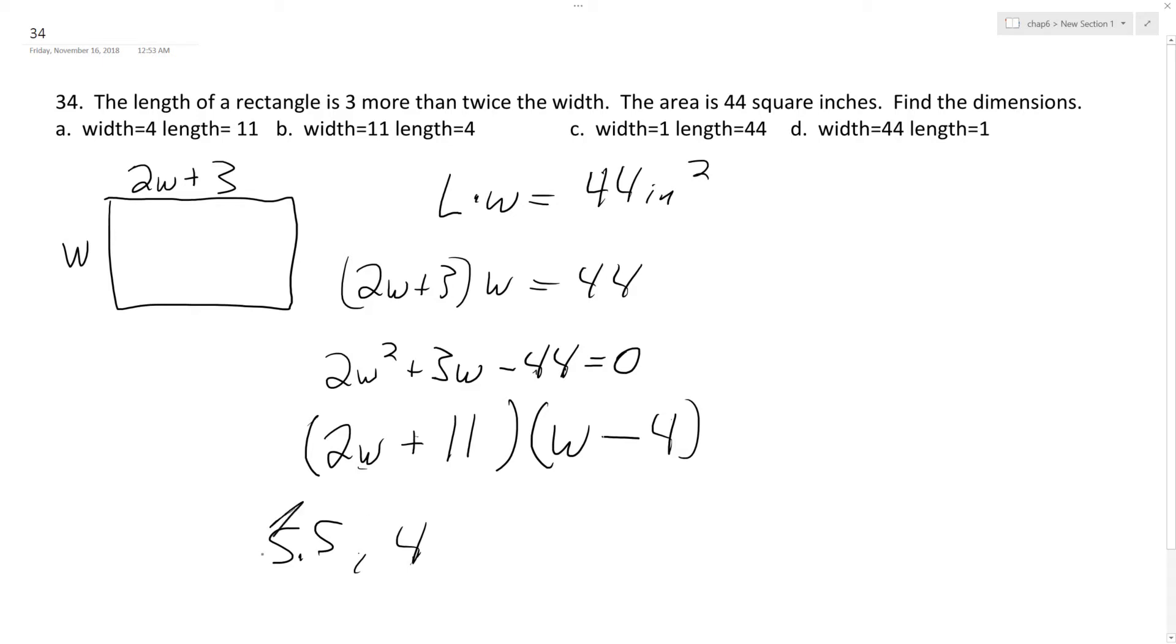So in this instance, length is going to be equal to 4. We did have negative 5.5, but that's an extraneous solution, so it's 4. So if we plug in 4 for W on our length, so 2 times W, so 8 plus 3. So that means length equals 11 inches, and width equals 4 inches.